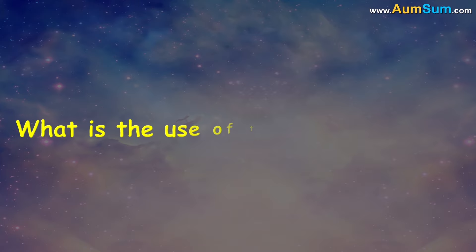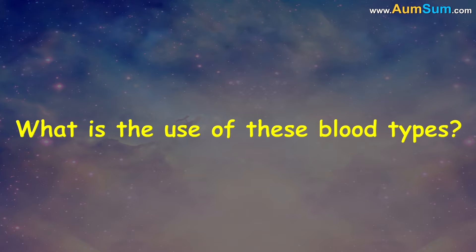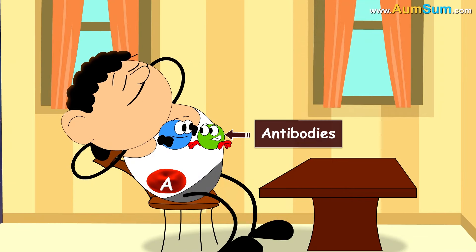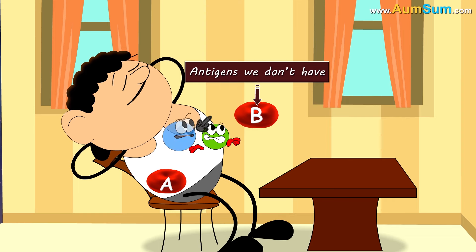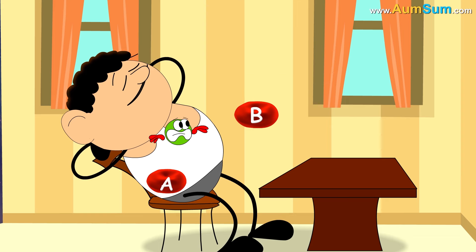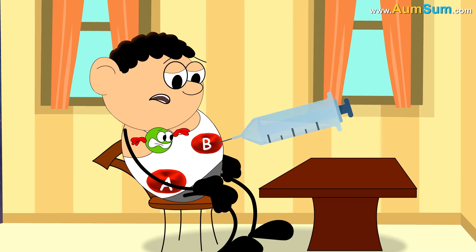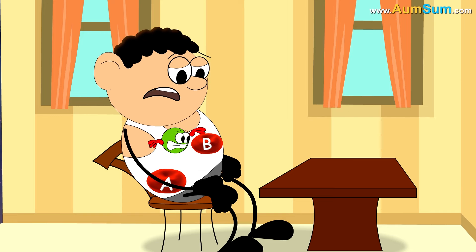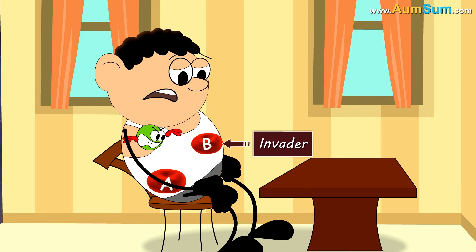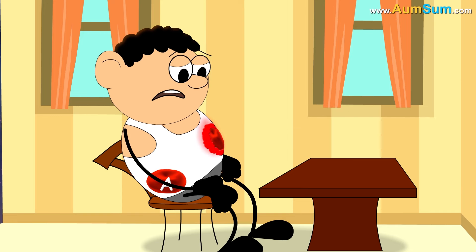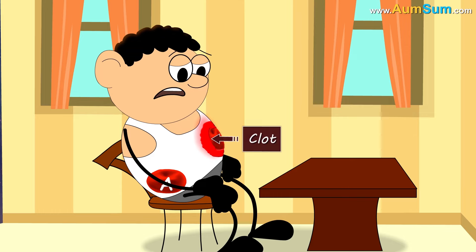But what is the use of these blood types? Our immune system produces antibodies against the antigens we don't have. So during transfusion, if wrong blood is injected, our antibodies will recognize the unknown antigen as an invader and start attacking it. This can cause transfused blood to clot, which can be potentially fatal.